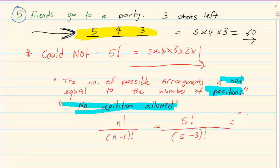Which is equal to five times four. Now what's five minus three? It's two. So we have five times four times three times two factorial over two factorial. The two factorial will cancel out and look we left with five times four times three.